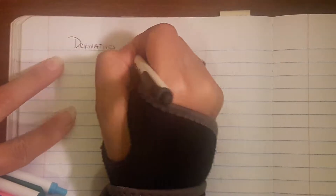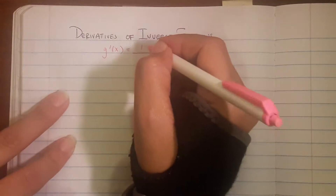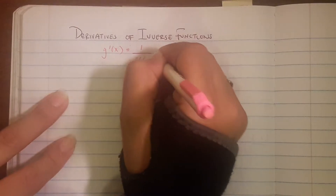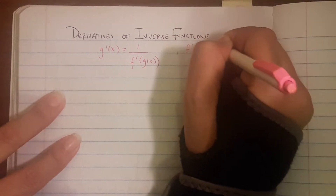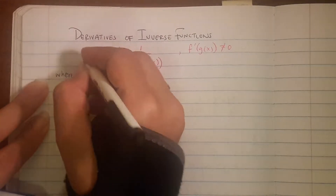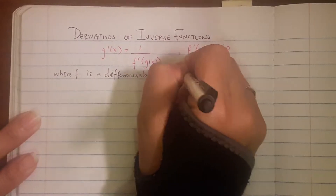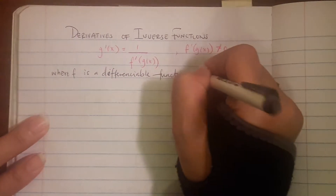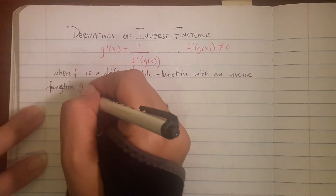Let's look at taking the derivatives of inverse functions. Derivatives of inverse functions are actually pretty easy if you just remember one simple rule. Remember that f prime of g of x cannot be equal to zero. This applies where f is a differentiable function with an inverse function g. In other words, the derivative of the inverse function is 1 over the derivative of the original function with g of x plugged into it.